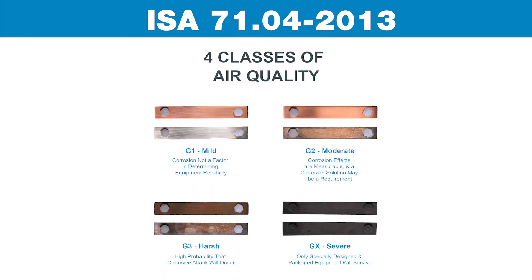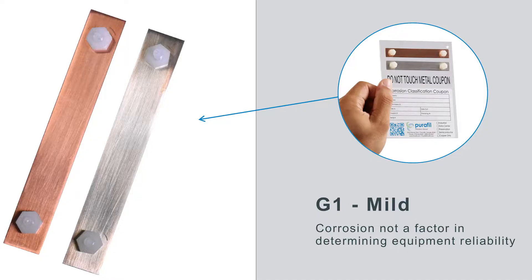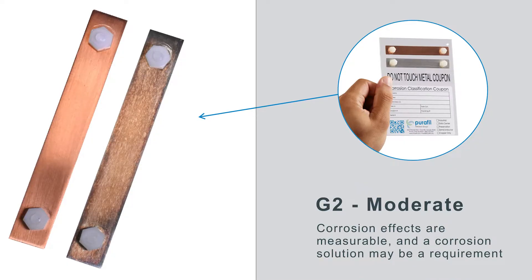There are four classes of ISA 71.04-2013 corrosivity levels. G1 – Mild. Corrosion is not a factor in determining equipment reliability. G2 – Moderate. Corrosion effects are measurable and corrosion may be a factor in your environment.